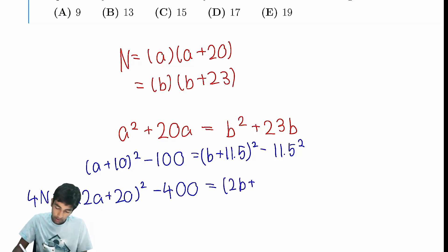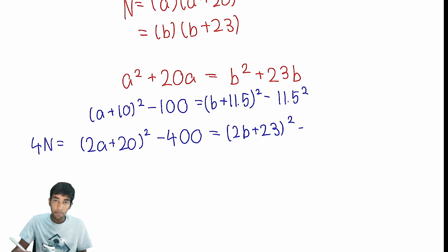Is equal to, now we have 2B plus 23 squared, because remember, we multiply by 2 inside the square, and similarly, 4 times 11.5 squared is 23 squared. And that's a lot more workable. And 23 squared is just going to be 529. Now we just add 529 to both sides, we get 129, and then we subtract 2A plus 20 squared, we get this.